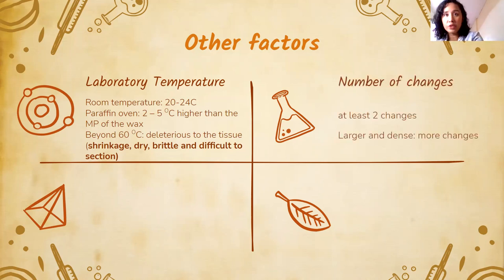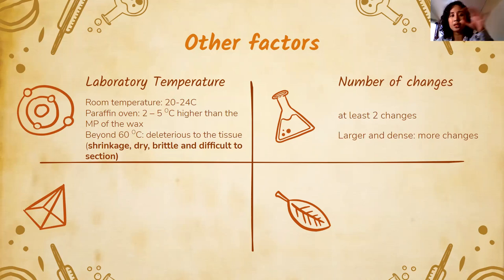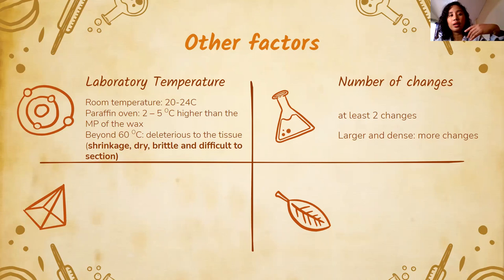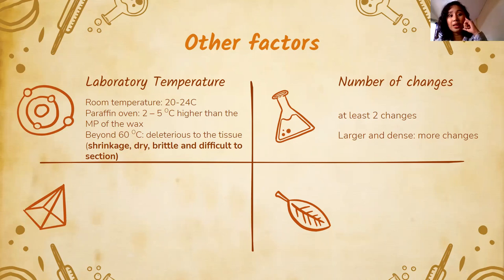Regarding number of changes: in infiltration, we change at least two times — that is the minimum. Of course, you need to remove the clearing agent, so you need fresh paraffin wax. The old paraffin wax containing xylene must be discarded. If there is xylene in the paraffin, infiltration will be difficult. The larger and denser the organ being infiltrated, the more changes you will need.